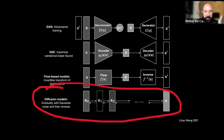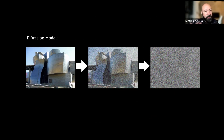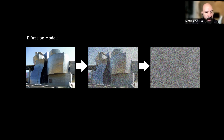Diffusion models are inspired by non-equilibrium thermodynamics. They define a Markov chain of diffusion steps that slowly add random noise to data, and then learn to reverse the diffusion process to construct desired data samples from the noise. To make this clearer: you can add noise to images — for example, in Photoshop there's a Gaussian noise filter, and if you crank it up more and more, you basically end up with random noise.